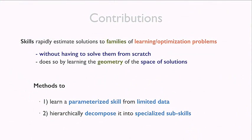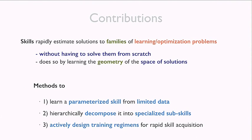There are three main contributions: first, a method to learn parameterized skills from limited data; second, how to create hierarchies of skills, enabling ever more abstract behaviors; and third, how to actively design training regimens to acquire a skill. This third idea is like an active learning approach — if I want to become really good at kicking soccer balls, which types of kick should I practice now to improve my overall performance across all possible future kicks?